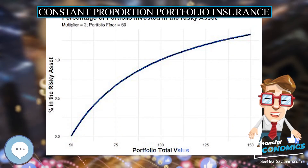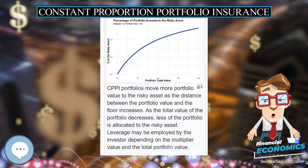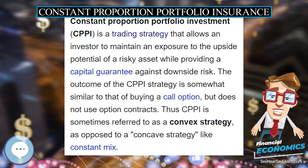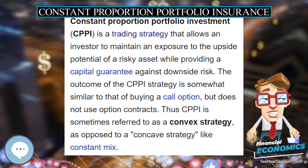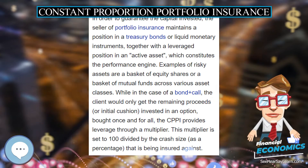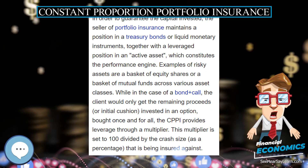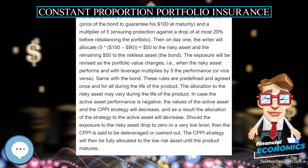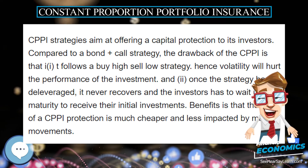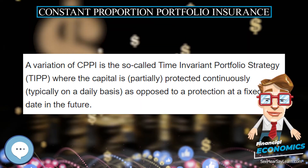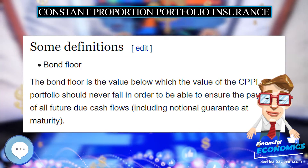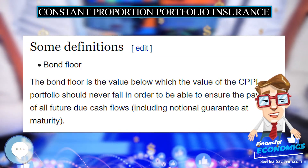Constant Proportion Portfolio Insurance (CPPI) is a trading strategy that allows an investor to maintain an exposure to the upside potential of a risky asset while providing a capital guarantee against downside risk. The outcome of the CPPI strategy is somewhat similar to that of buying a call option but does not use option contracts. CPPI is sometimes referred to as a convex strategy, as opposed to a concave strategy like constant mix. CPPI products on a variety of risky assets have been sold by financial institutions, including equity indices and credit default swap indices.